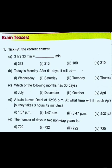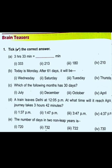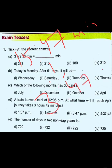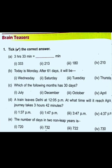Which of the following months has 30 days? The answer is April, as the others have 31 days. Now, a train leaves Delhi at 12:05 PM. At what time will it reach Agra if the journey takes 3 hours 42 minutes? Adding those, we get 15 hours 47 minutes on the 24-hour clock, which equals 3:47 PM. So option 3 is correct.